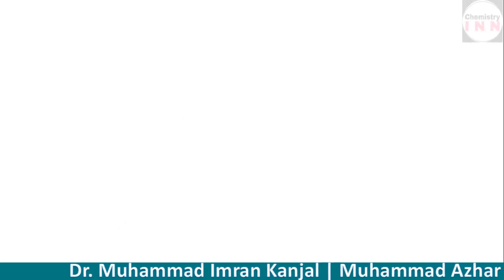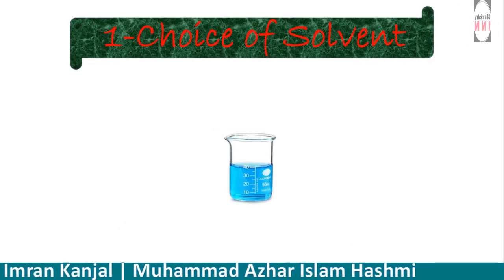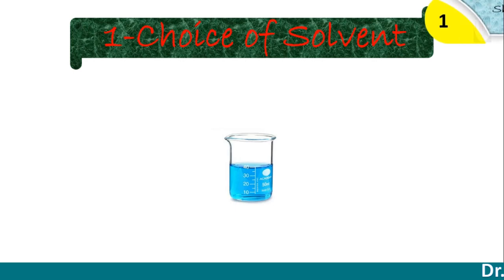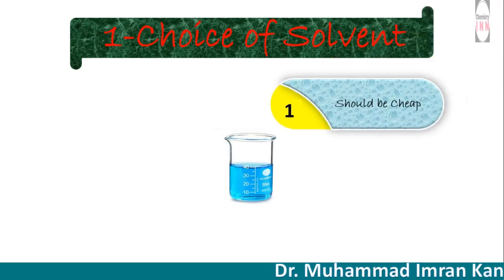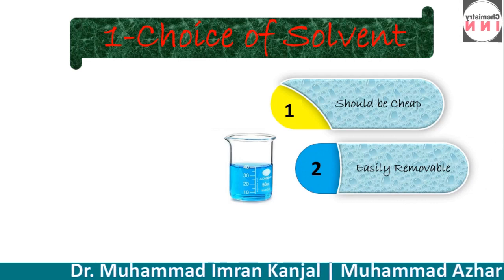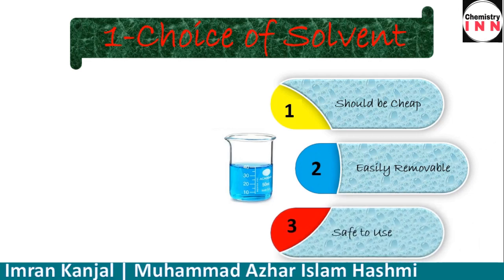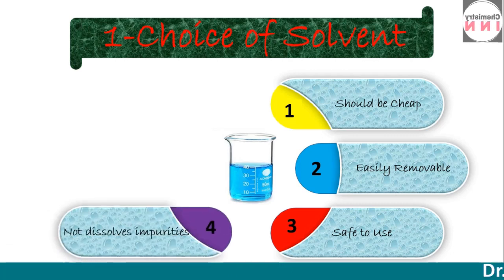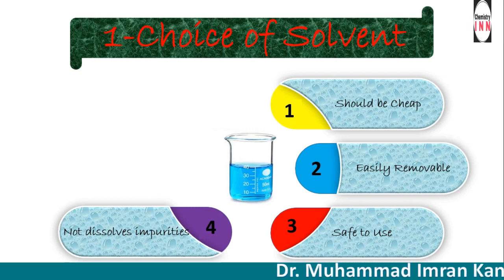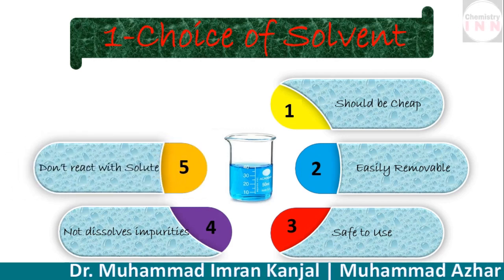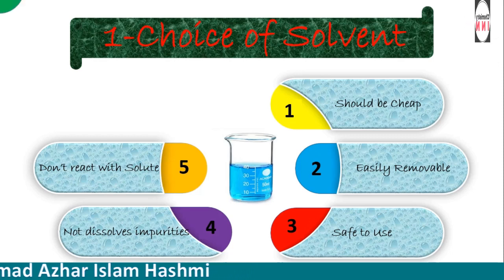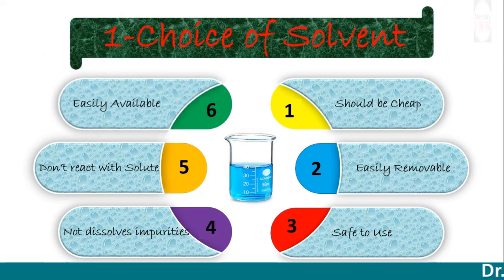Now we discuss each step in detail. Initially, we choose a solvent with the following properties: the solvent should not be costly; it should be easily removable; it should be safe to use; it should only dissolve the solute and not the impurities; it should not react chemically with the solute; and it should be easily available.